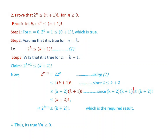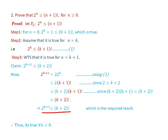Now (k+2) times (k+1) factorial is equal to (k+2) factorial. This implies that 2 to the power of k plus 1 is less than or equal to (k+2) factorial, which is the required result. It is true for n greater than or equal to 0.